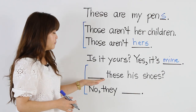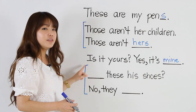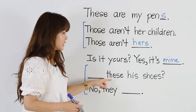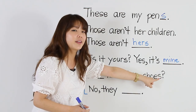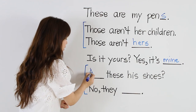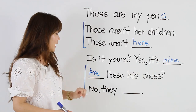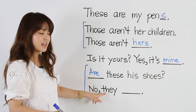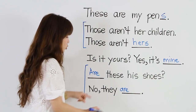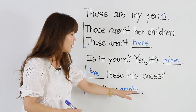And the last two: 'These… his shoes.' We need a be-verb here. We have 'these' and 'shoes' with an S, so we need the plural be-verb: 'Are these his shoes?' And the answer: No. They — plural — 'They aren't.' Are not. Aren't.